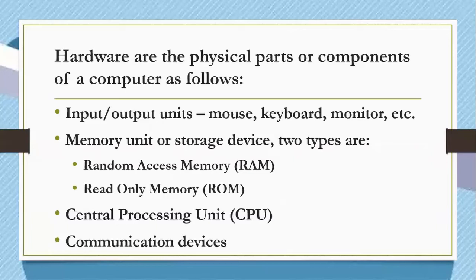The central processing unit is the electronic circuitry inside the CPU case where the operations of data and information are controlled and where programs are executed. Also included inside the CPU case are the motherboard, microprocessor, power supply, random access memory, the CD drive, the hard drive, and graphics or video card.